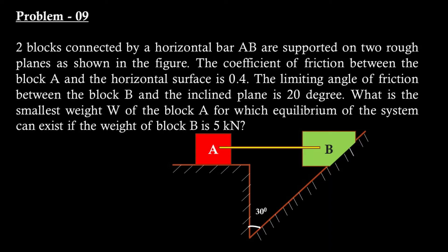Two blocks connected by a horizontal bar AB are supported on two rough planes as shown in the figure. The coefficient of friction between block A and the horizontal surface is 0.4. The limiting angle of friction between block B and the inclined plane is 20 degrees. What is the smallest weight W of block A for which equilibrium of the system can exist if the weight of block B is 5 kN?